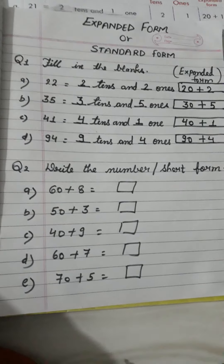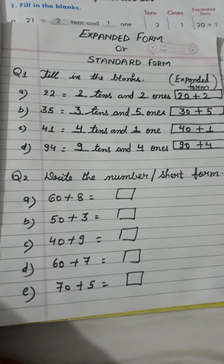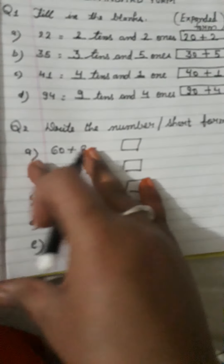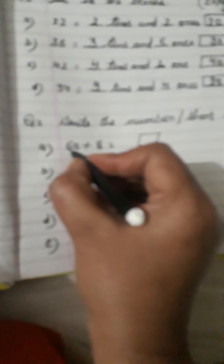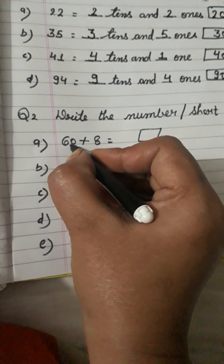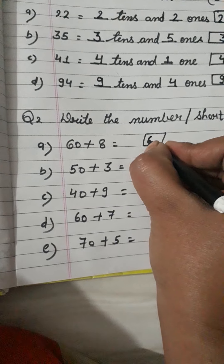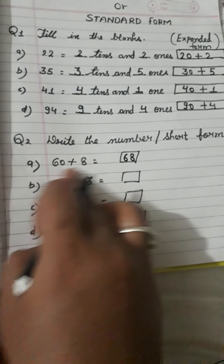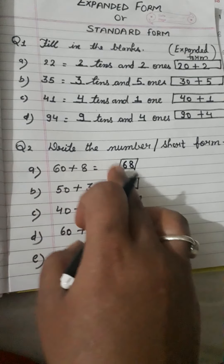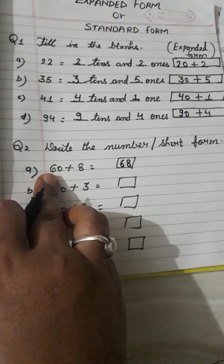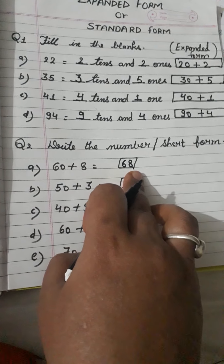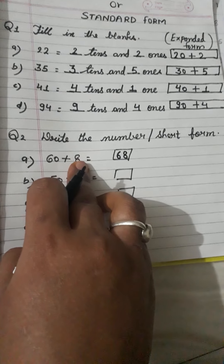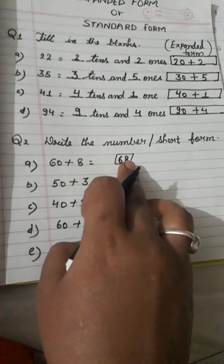Exercise number 2 is to write the short form. 60 plus 8: 60 means 6 tens, so we write 6 tens and 8 ones. This is the short form of the expanded form. When we separate the numbers it is called expanded form, and when we join the number it is called short form. So 68 is the short form and 60 plus 8 is the expanded form.